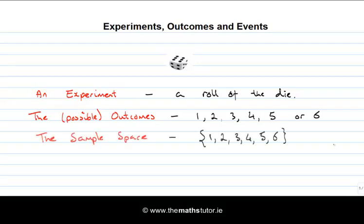The sample space is the set of all possible outcomes. In this case, we take the list of all possible outcomes and make it into a set. So the sample space is the set whose elements are 1, 2, 3, 4, 5, and 6.